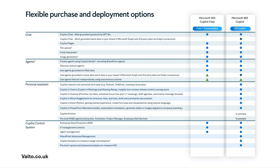If you want additional security controls, the premium licenses also bring in SharePoint advanced management — giving you much more control over your SharePoint, OneDrive, and document storage spaces. You also get Copilot analytics to measure usage and adoption, giving insight into who's using Copilot, what they're using it for, and their consumption. There are also pre-built reports in the advanced analytics area to help measure return on investment, because the costs of Copilot aren't cheap and we want to make sure we're getting the best ROI.